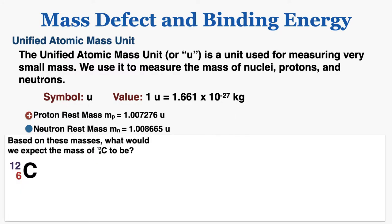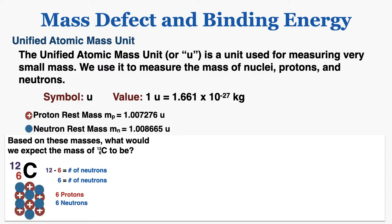To introduce mass defect, I'm going to start with this question: based on these masses of protons and neutrons, what would we expect the mass of a carbon-12 atom to be? For now I'm going to ignore the mass of electrons because they're so small. A carbon-12 atom has six protons, and the number of neutrons equals the nucleons minus the protons, so there are also six neutrons.